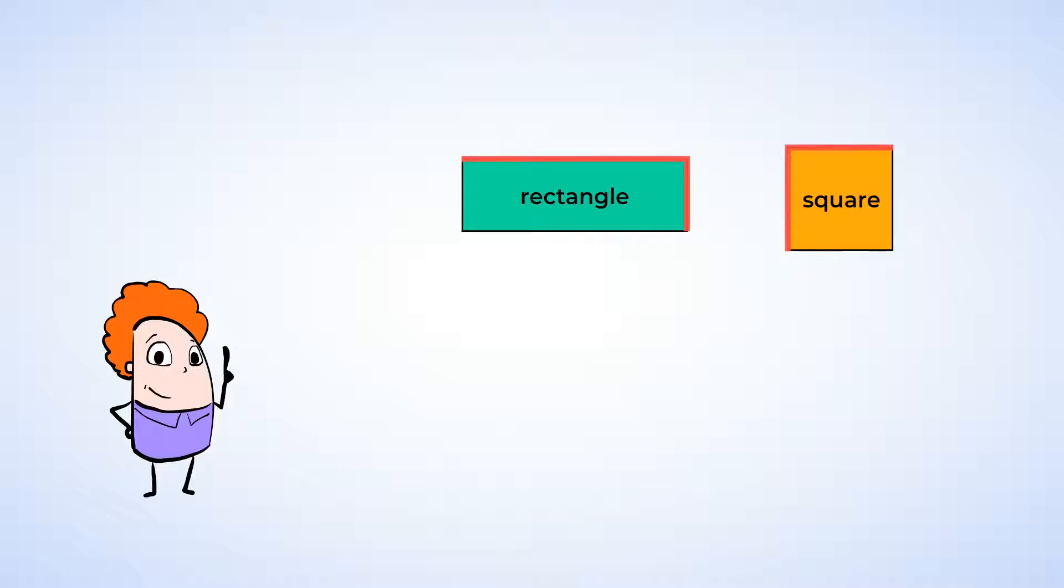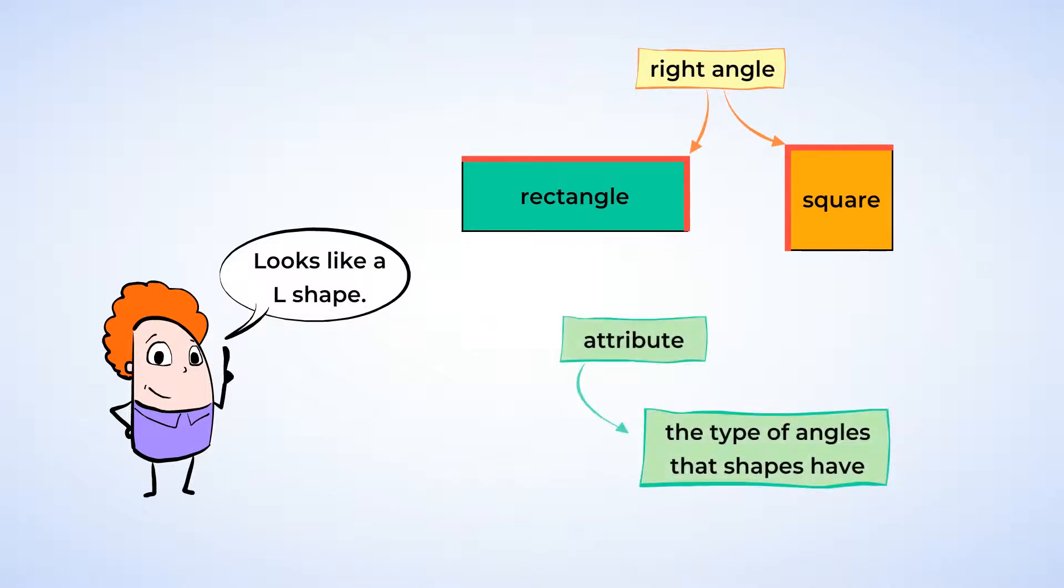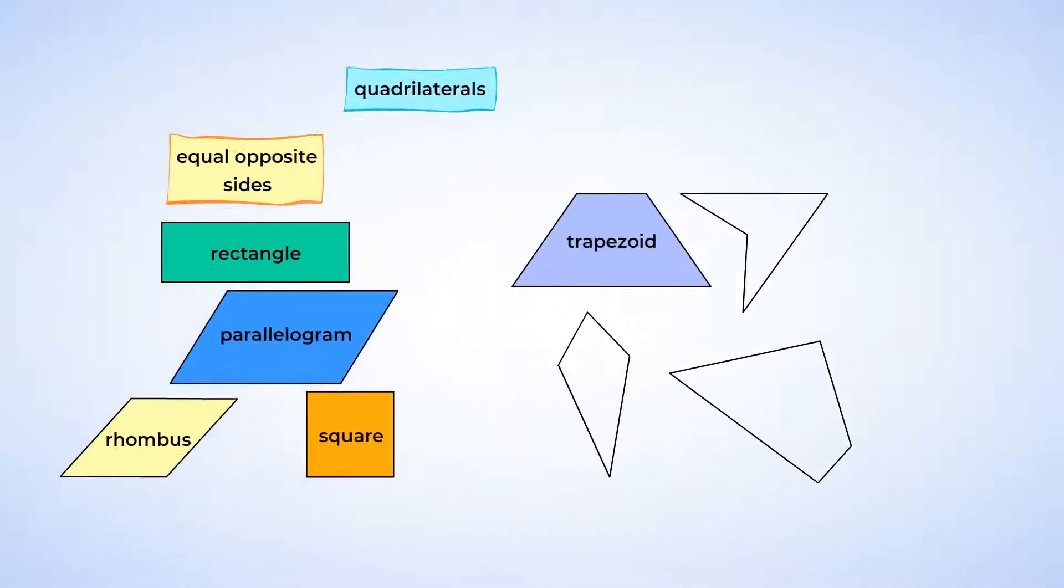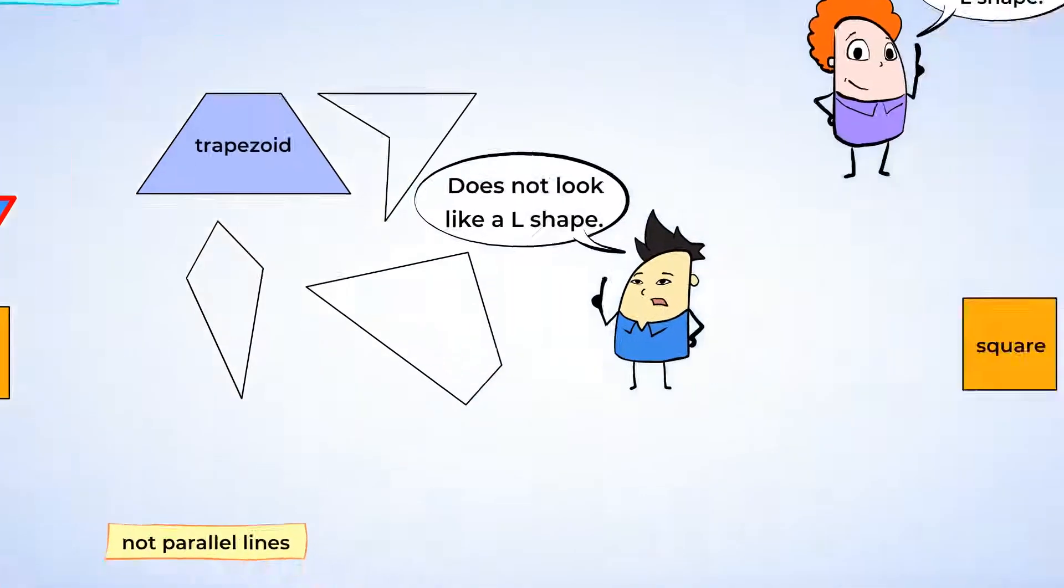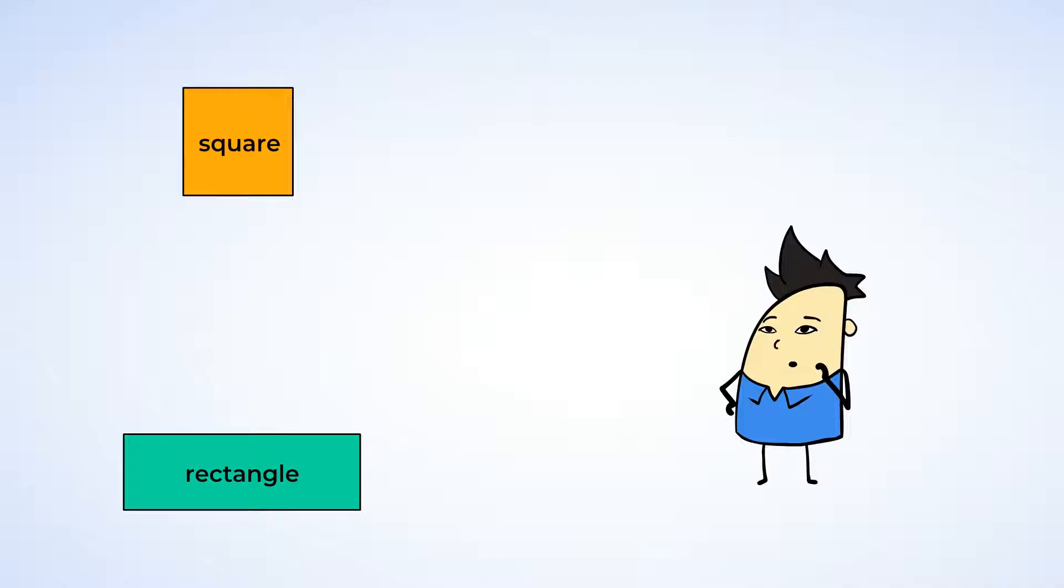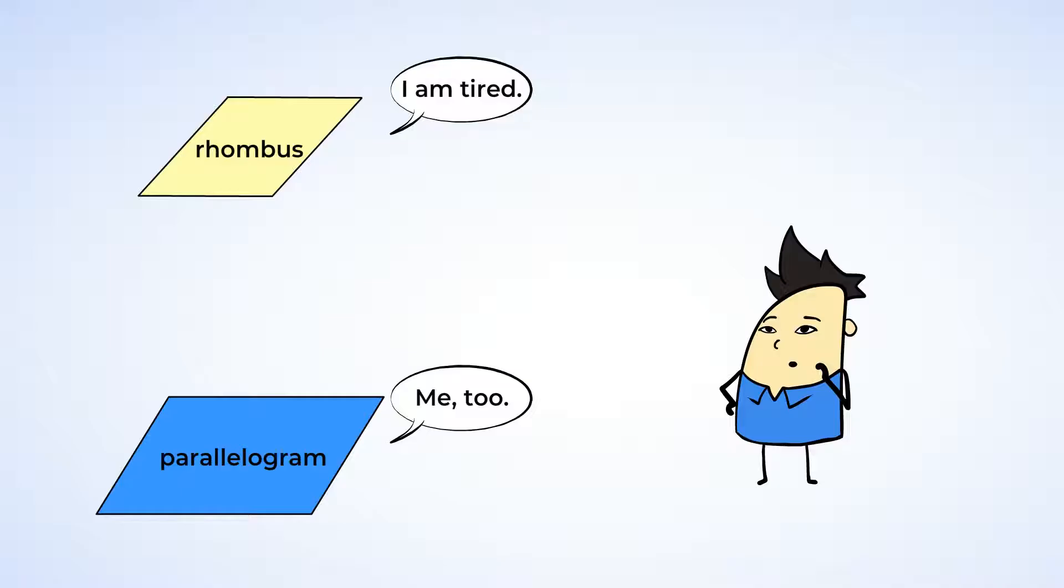Look at the square and the rectangle. See how the sides come together at a nice corner that looks like an L shape? This is called a right angle. The types of angles that shapes have is another attribute. The rhombus and the parallelogram do not have their angles as an L shape. Here's an easy way to remember it: The rhombus is the tired and sleepy cousin of the square, and the parallelogram is the tired and sleepy cousin of the rectangle.